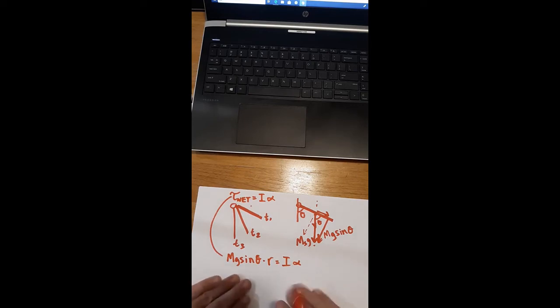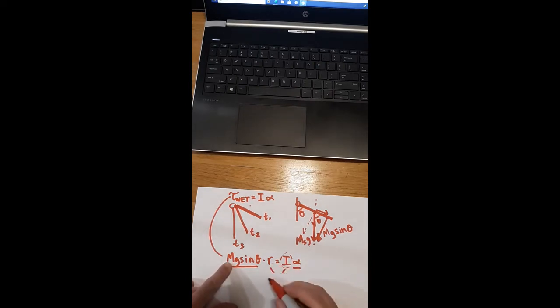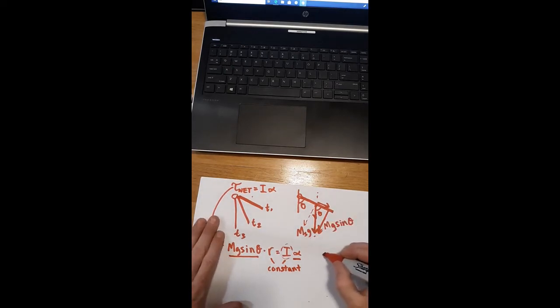So now looking at this, does the I change? Does this thing's mass distribution, the thing that's spinning, does its rotational inertia change? No, it does not. Does the R change? Does the attachment point where MG is acting change? No, it doesn't. So then we zero in on this idea of MG sine theta and alpha. Does MG sine theta change? And if it does, well, then alpha changes. These two are constant no matter what location I'm looking at.